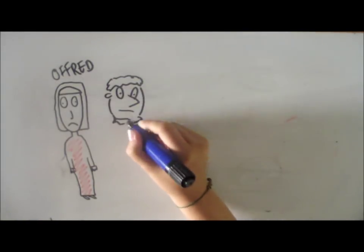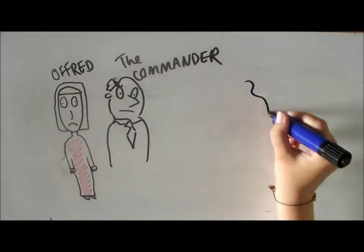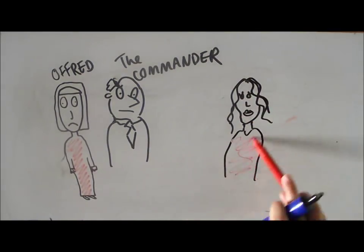A handmaid's job in Gilead is to be assigned to married couples in order to bear their children. Offred is assigned to the Commander and his wife, Serena Joy. And they look like this, probably.